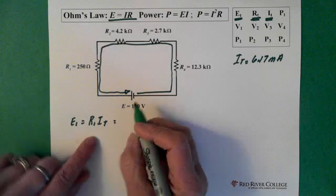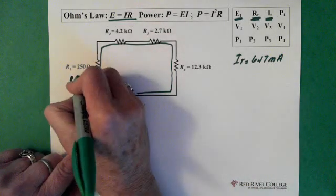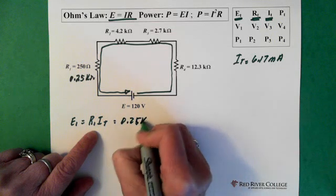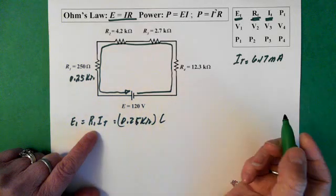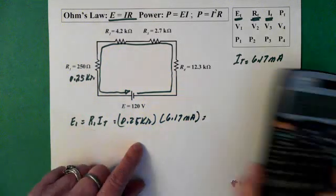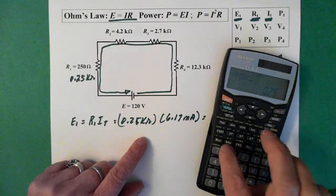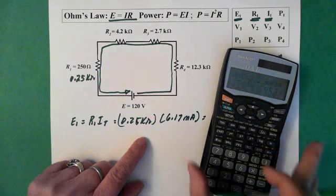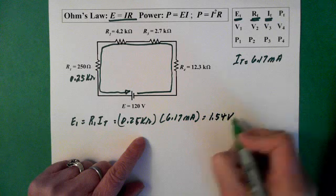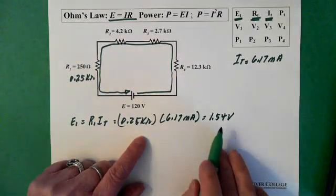So it's always the same current going through here. R1 times I total. The resistance is, and we remember it was 0.25 kilohms. So 0.25 kilohms times our current, which is still in the calculator, multiply it by 0.25 exponent 3 equals 1.54 volts. And it makes sense that this voltage is small. We can see that the 250 ohms is quite small compared to the other resistors. So this voltage should be small.